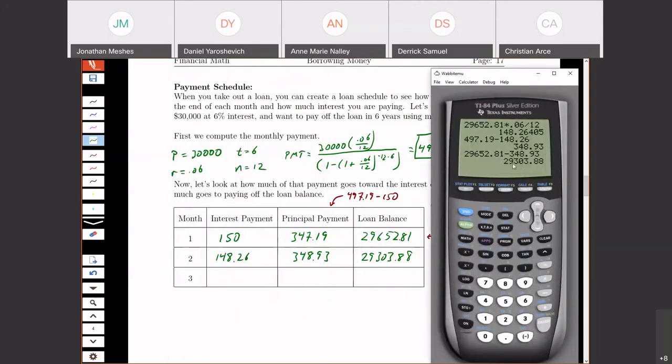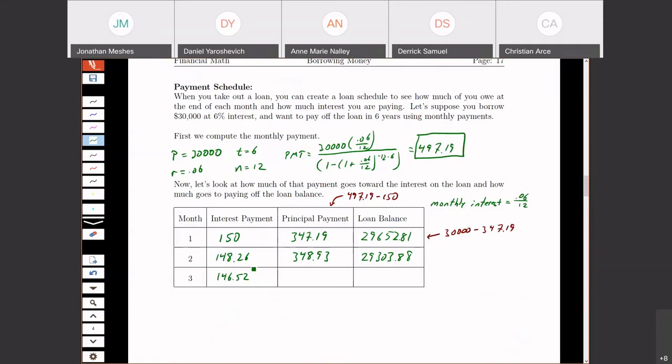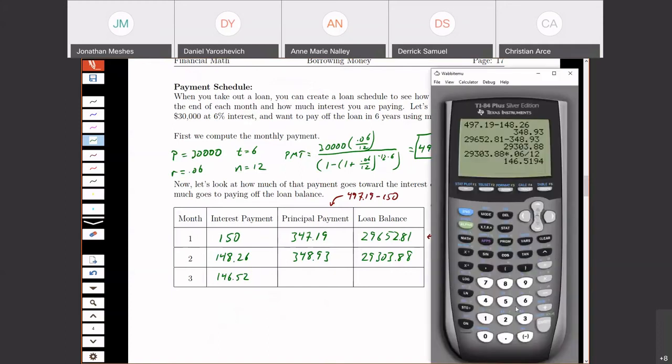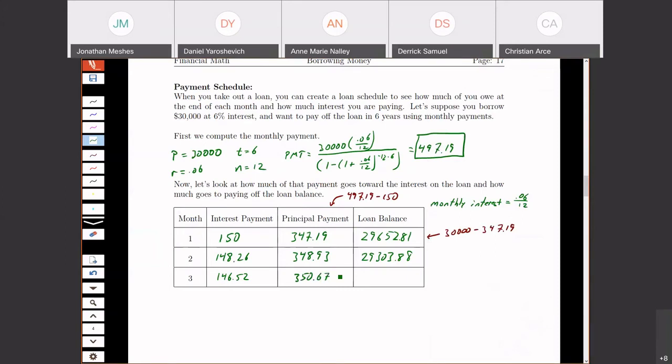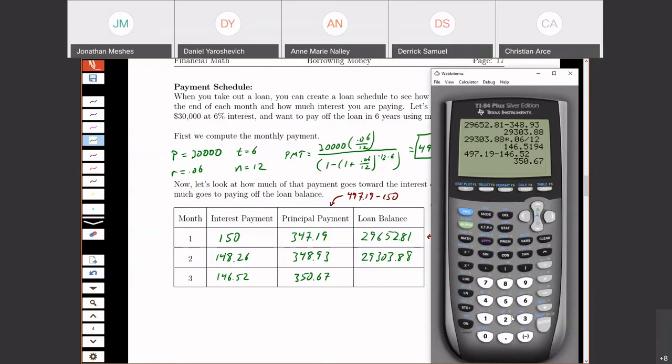So my interest payment, I take this last month's previous balance and multiply it by 0.06 divided by 12. So we get $146.52 rounded to the nearest cent. And then again, we take our same, the monthly payment is the only thing that does not change ever, right? It's the same for each month. So I take that monthly payment, subtract how much of it went towards interest, and then the remainder goes towards my principal, $350.67. So then we take our previous month's balance and subtract how much we paid off and we get our new balance.